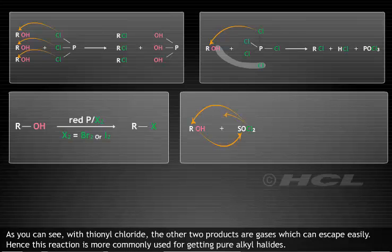With thionyl chloride, the other two products are gases which can escape easily. Hence, this reaction is more commonly used for getting pure alkyl halides.